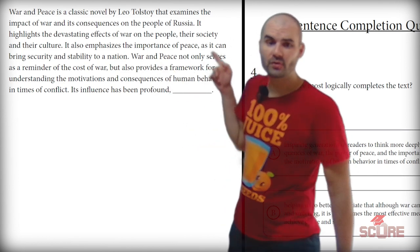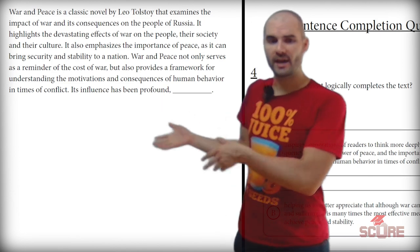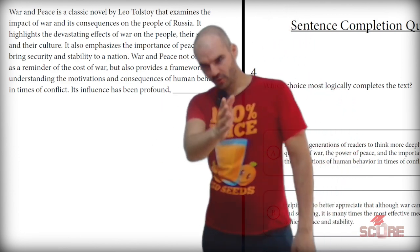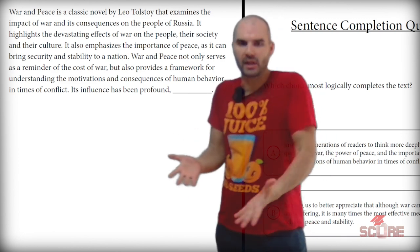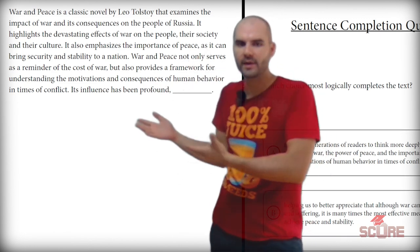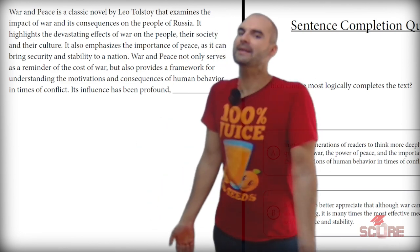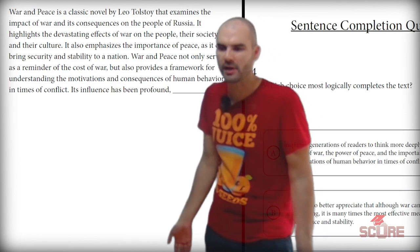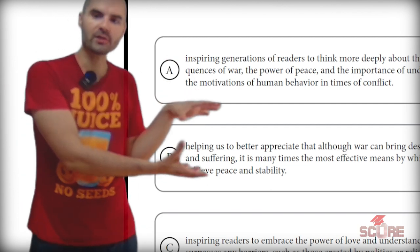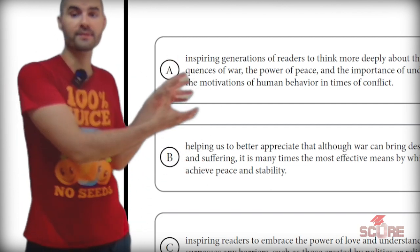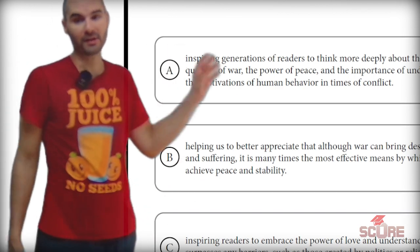War and Peace is a classic novel by Leo Tolstoy that examines the impact of war and its consequences on the people of Russia. At the end it says its influence has been profound — and we're going to finish that sentence. We're looking for its influence, and based on the title, I'm willing to bet it's not exactly a positive review of war. Option A says: inspiring generations of readers to think more deeply about the consequences of war, the power of peace, and the importance of understanding human behavior in times of conflict. That sounds like a really good answer.